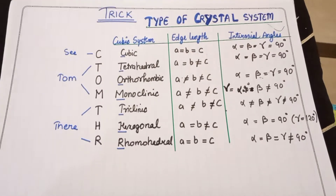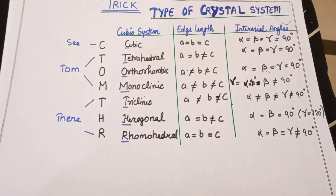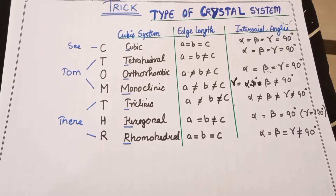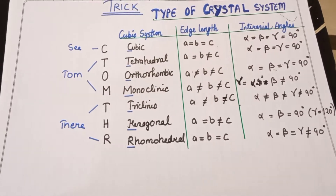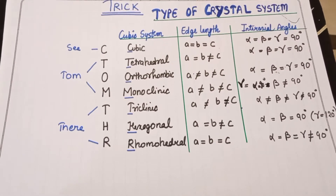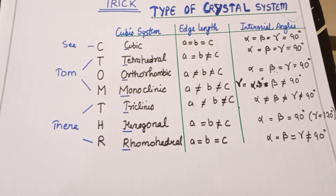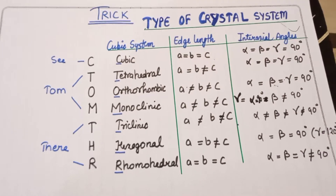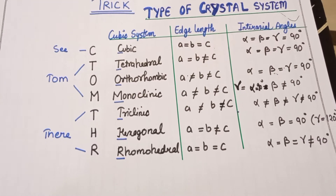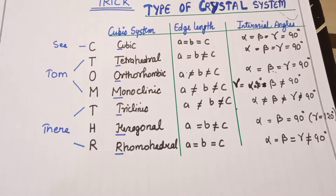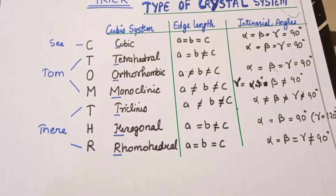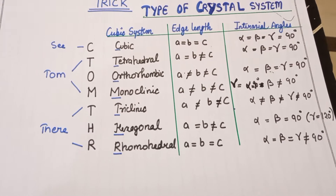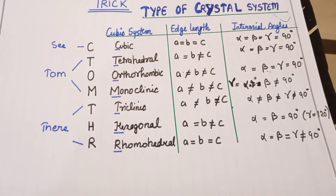Hey guys, welcome back to my channel. Today we're going to discuss the trick to learn the types of crystal systems. This is the topic of Class 12 Chapter 1, Solid Chemistry. When you read this chapter, you will have to read this table in your NCERT book, but the confusion is how do you remember it.